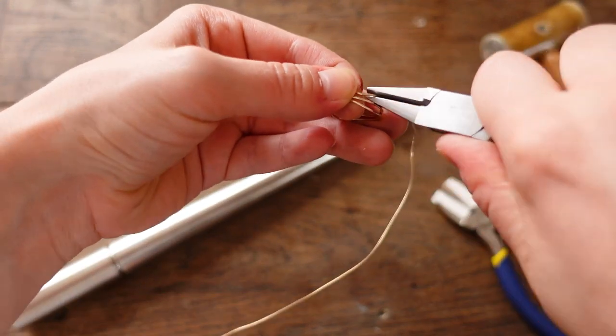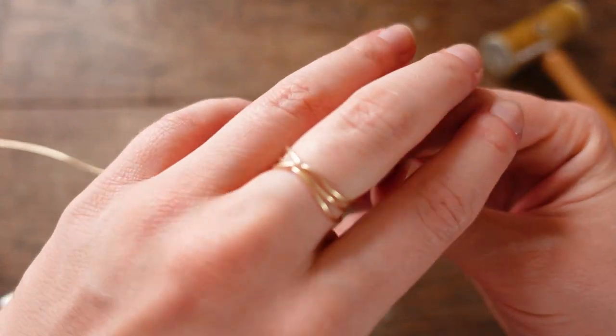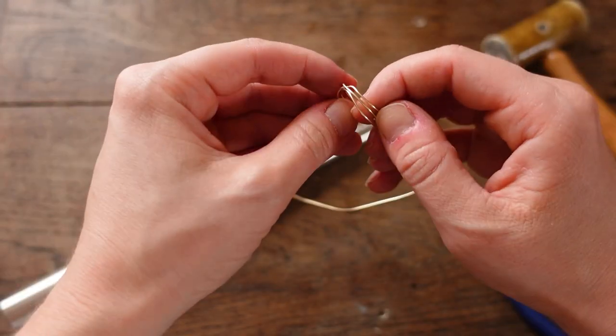Use pliers, ideally half round ones, to add shapes to the wire and to help it twist and tangle.